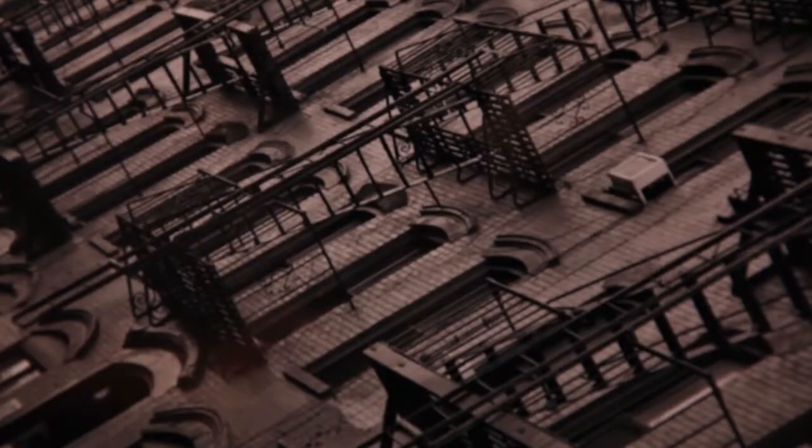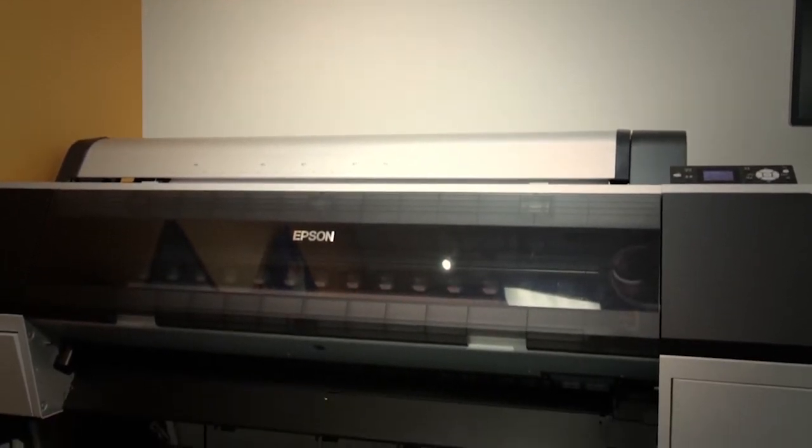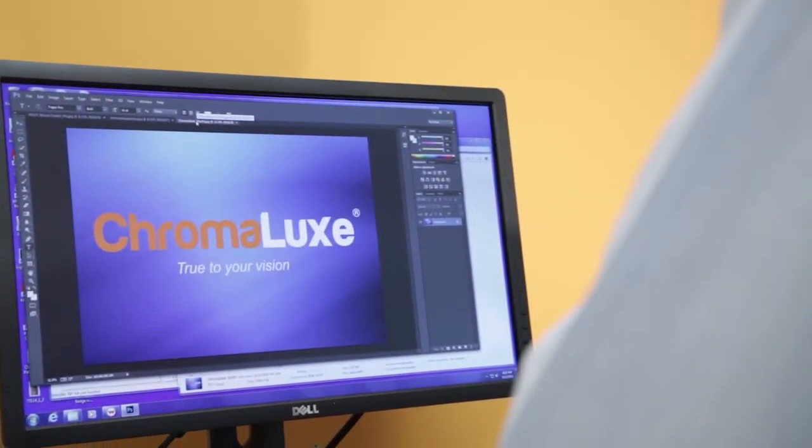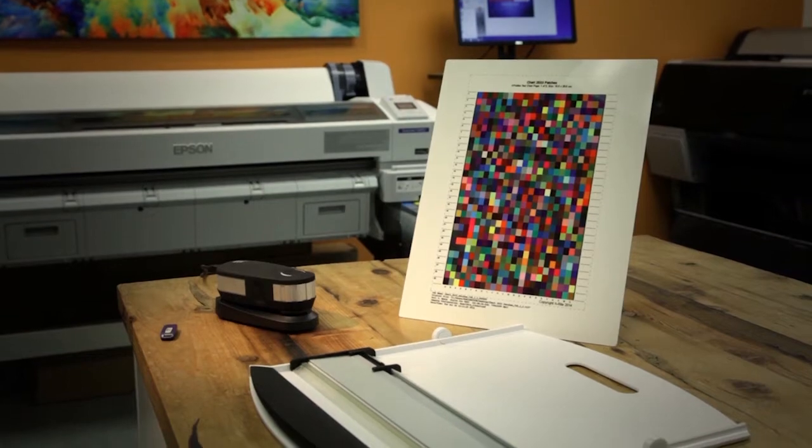You can achieve quality results on Chromalux panels using the following recipe: a professional sublimation printer, professional graphics software, RIP software to ensure quality ink coverage and consistent color output, and a spectral photometer for creating profiles.